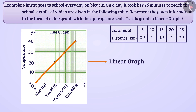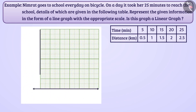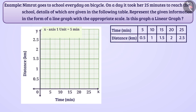Let us draw a graph based on the information shown. Draw two mutually perpendicular lines on the paper — the horizontal x-axis and the vertical y-axis. We will show time in minutes by taking 1 unit equal to 5 minutes on the x-axis. Similarly, we will show distance on the y-axis by taking 1 unit equal to 0.5 km.